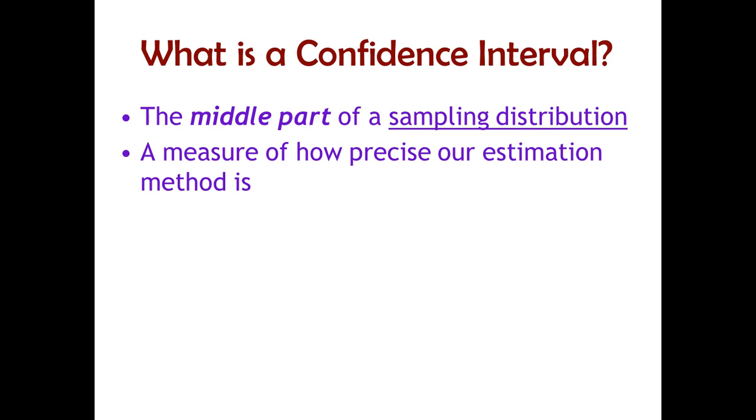It's also, much more importantly for us, a measure of how precise our method of estimating some point in the population is. Usually a mean. We're usually trying to use our sample mean and say, how good an estimate of the population mean is this? Our sample mean is automatically an estimate of the population mean. We want to know how good an estimate that is.